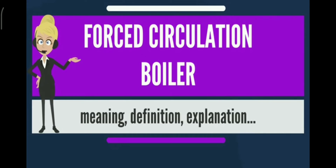In a water tube boiler, the water is recirculated inside until the vapor pressure of the water overcomes the vapor pressure inside the steam drum and becomes saturated steam. The forced circulation boiler begins the same as a natural circulation boiler, at the feed water pump. Water is introduced into the steam drum and is circulated around the boiler, leaving only as steam.